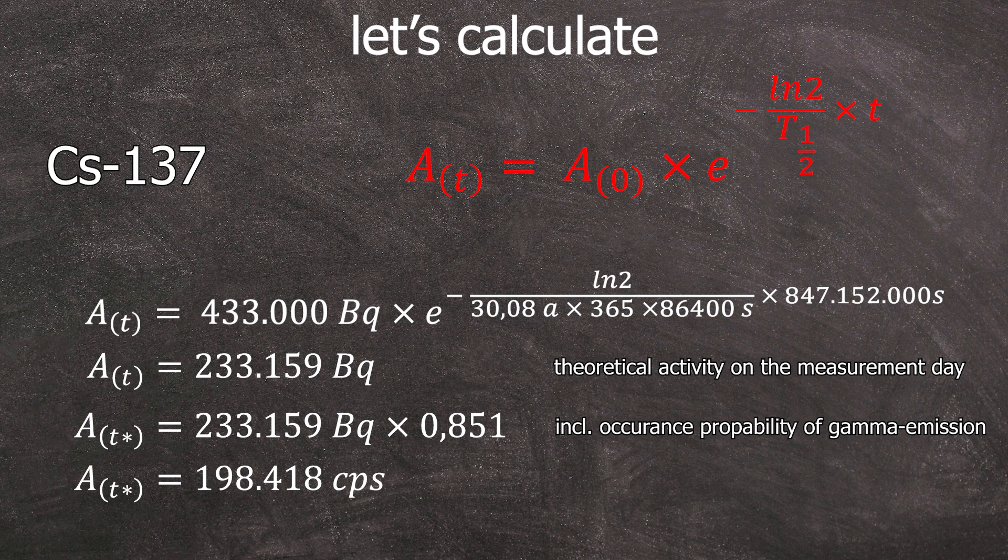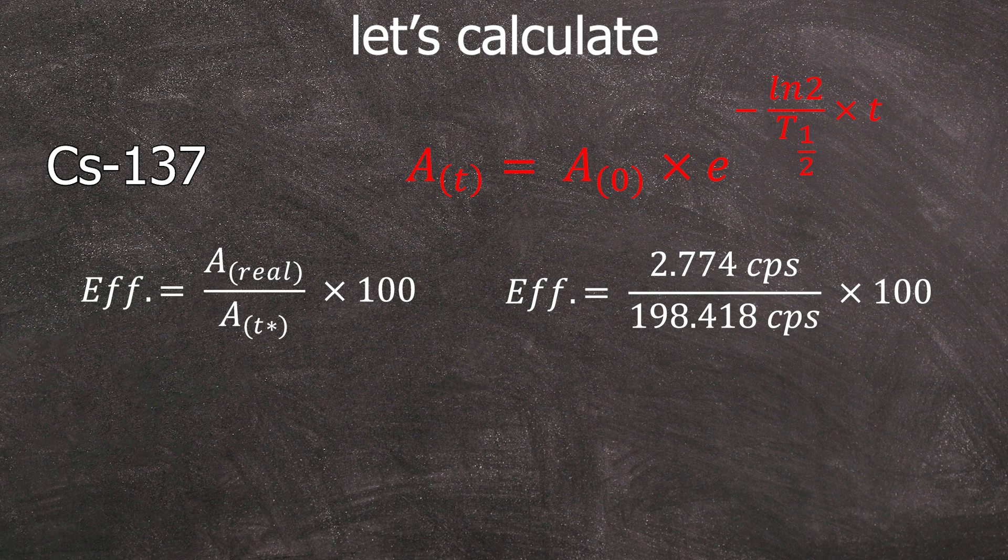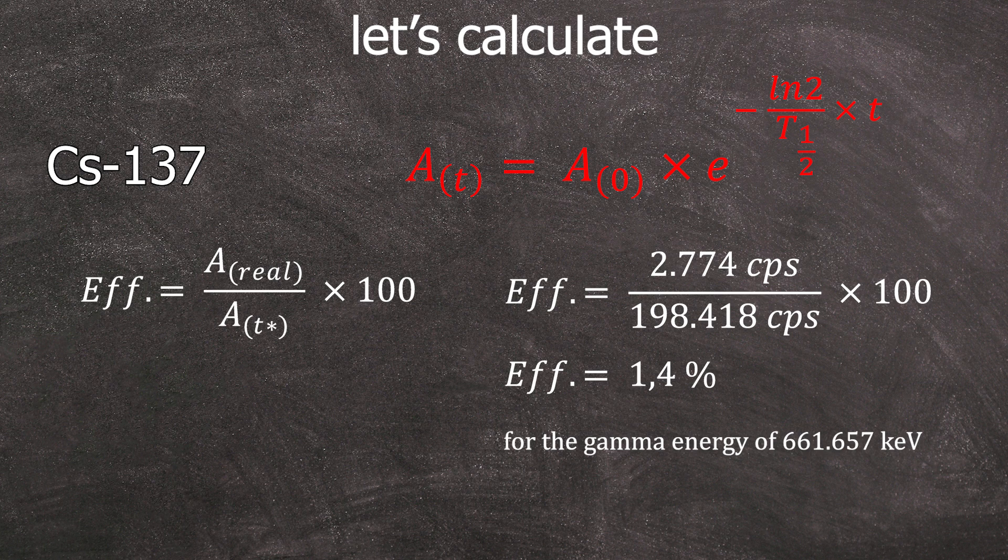Now, let's proceed with the efficiency calculation. The net area CPS from before in the ROI is divided by the theoretical CPS. The result is an efficiency of 1.4% for the gamma energy of 661 keV. Let's record that.